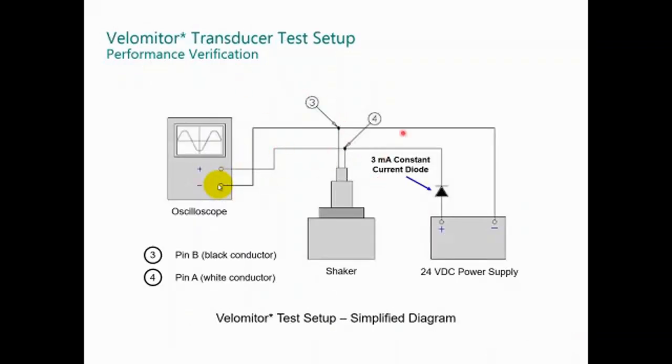For testing the velometer using external power supply, don't forget the 3 milliamp constant current diode to protect the transducer. It's mandatory to do that. If you're using the monitor, you don't need the constant current diode because it's included into the monitor.